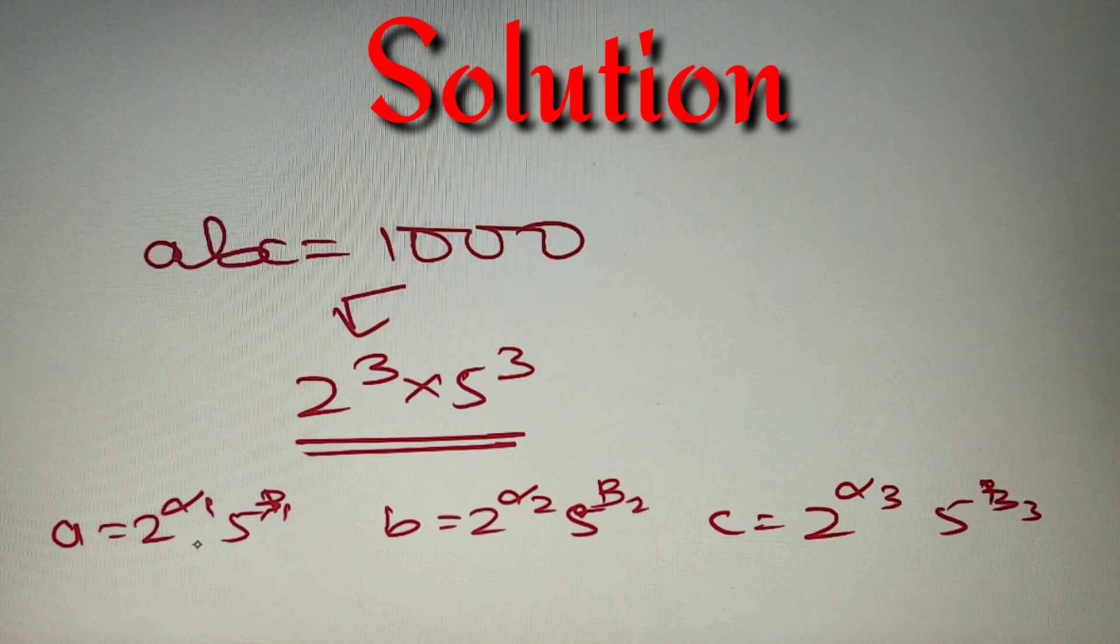After this we have got that α₁ + α₂ + α₃ = 3 and β₁ + β₂ + β₃ = 3. And now after solving this, we'll get our solution.